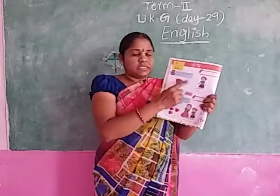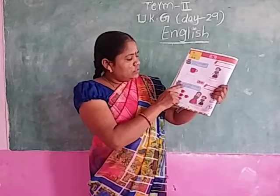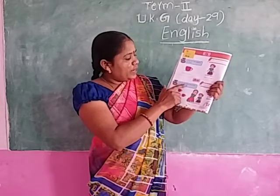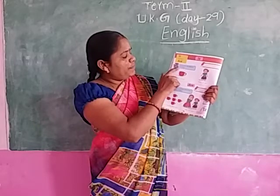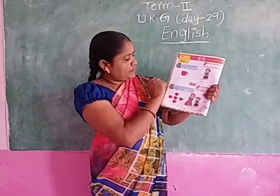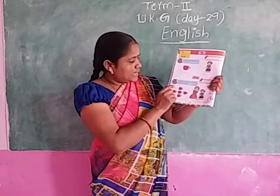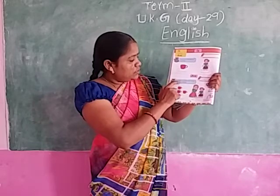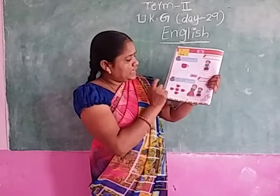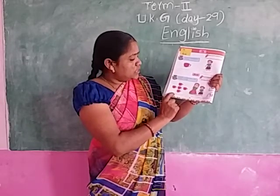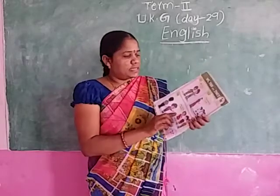Is and are. Use 'is' for one person or thing: This is a cup. She is a girl. Use 'are' for more than one person or thing: These are cups. They are girls.